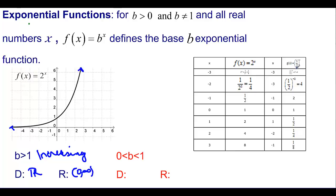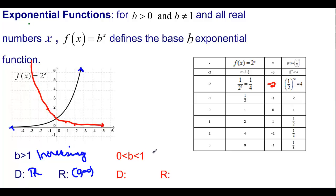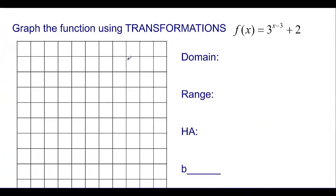Now let's look at G of x equals one-half to the x, where B is between zero and one. If we put in negative 3, that's (1/2) to the negative 3 — we flip it over for the negative — giving us 2 to the third, which is 8. Negative 2 gives 4, negative 1 gives 2, zero gives 1, one gives one-fourth, and so on. This graph has the same basic shape but is decreasing. The domain is still all reals, and the range is from zero to infinity because it stays above the x-axis.